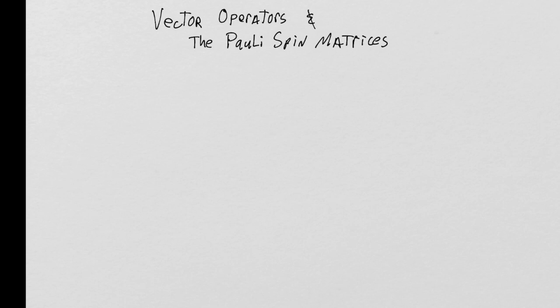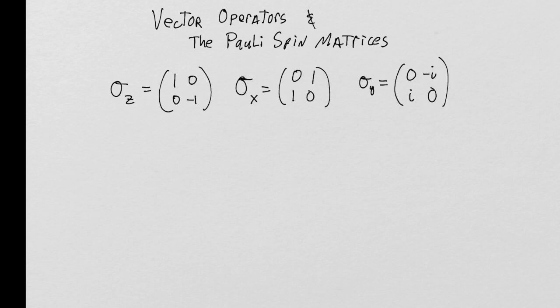In other words, they say, 'oh, so now we're going to introduce the legendary, famous, well-known Pauli spin matrices,' and then the next thing you see is — ta-da — the matrices. Then all of a sudden you start working with them. What we're going to try to do with this lecture is derive them: where did these guys actually come from and why are they the way they are?